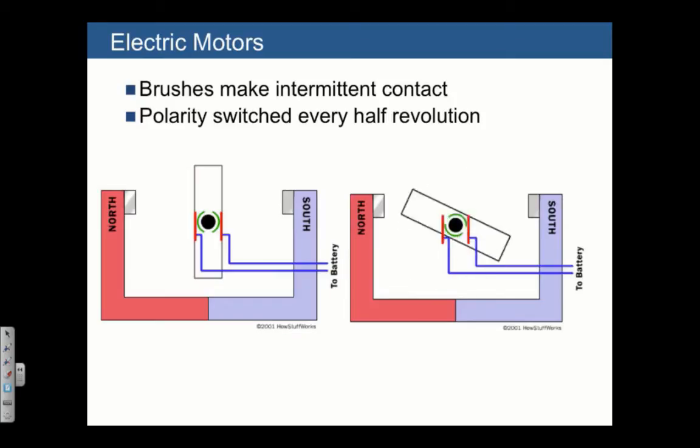That magnetic field is attracted to the poles of some field magnets on the outside of the motor. This is enough to attract one side of the rotor to a particular side of the magnet. In order to keep the rotor moving, the polarity switches every half revolution, and that's through these brushes that make intermittent contact with the two ends of the coil.